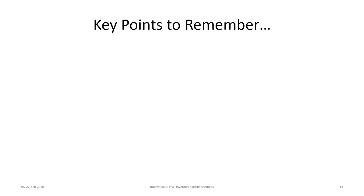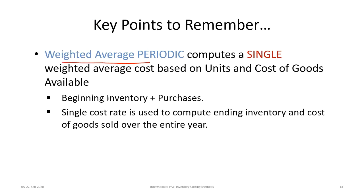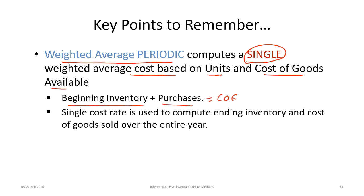Now for some key points to remember. First, the weighted average periodic approach computes a single weighted average cost based on the number of units and the cost of goods available, determined by taking beginning inventory plus any purchases. We then use that single cost rate to calculate both the ending inventory and the cost of goods sold over the entire period — whether that period is a year, a month, or whatever timeframe applies.